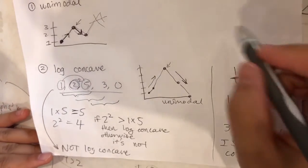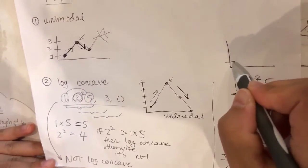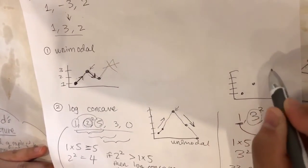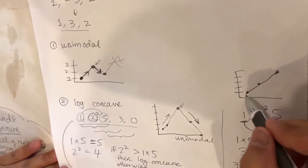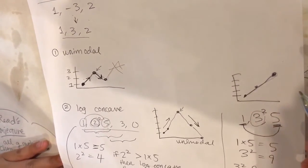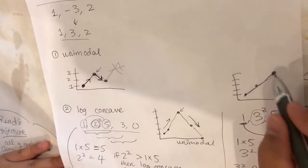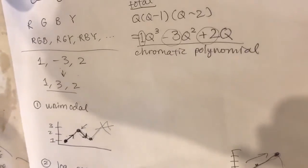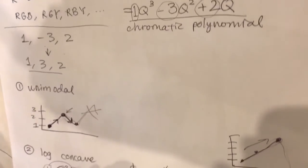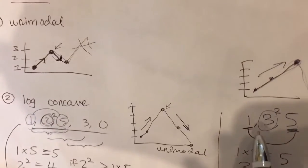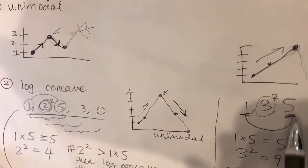But if we look at it, if we graph it, 1, 3, 5, we see that it is not unimodal because it doesn't peak. It just keeps increasing upwards. So this is an example of something that is unimodal but not log concave, and this is something that is log concave but is not unimodal.